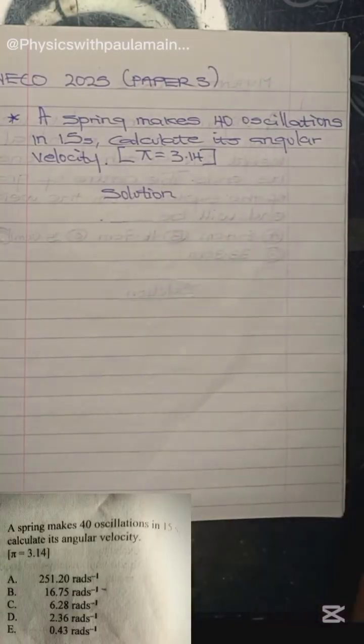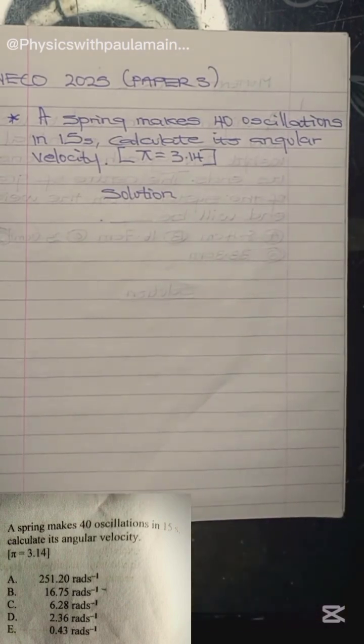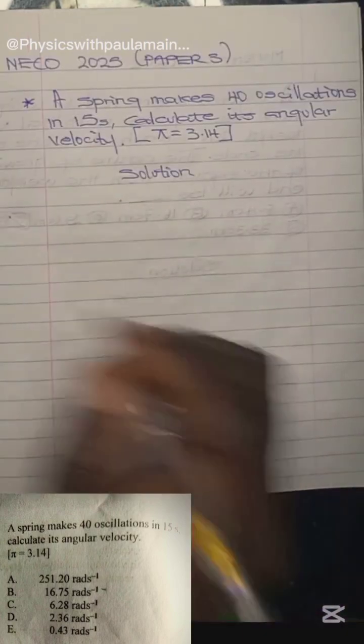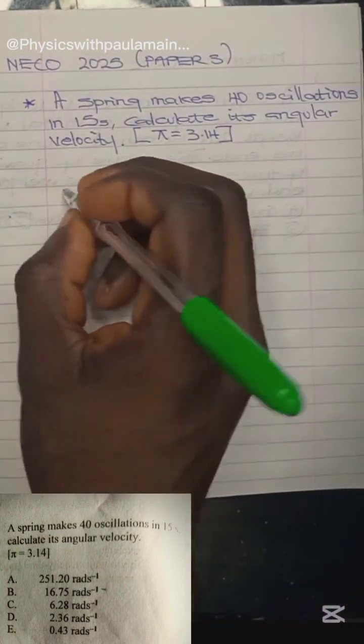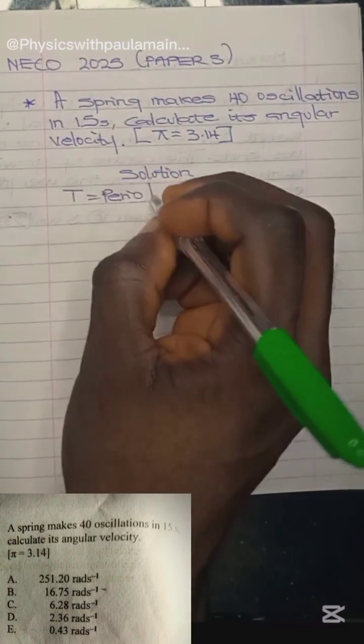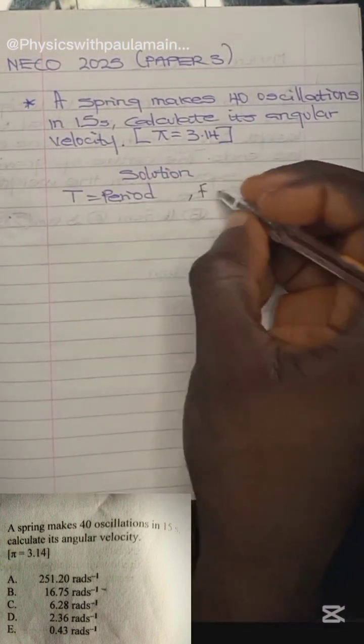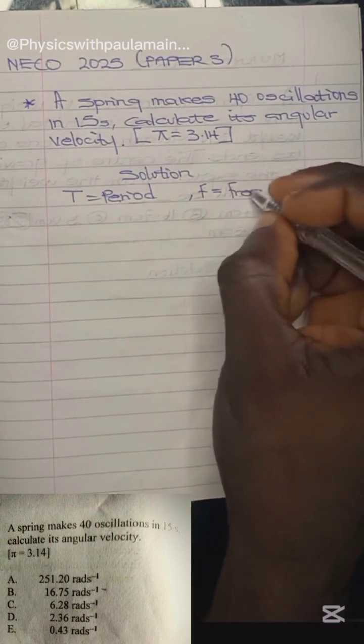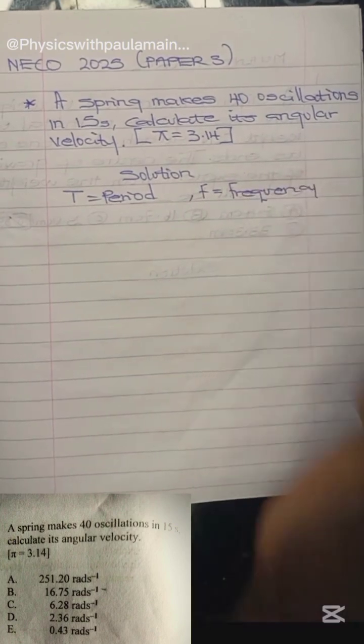When dealing with oscillation, spring, or materials that execute simple harmonic motion, there are basic foundational formulas we should not forget. One relates the period of a body undergoing simple harmonic motion - period is represented with capital letter T - and the frequency, represented with letter f.